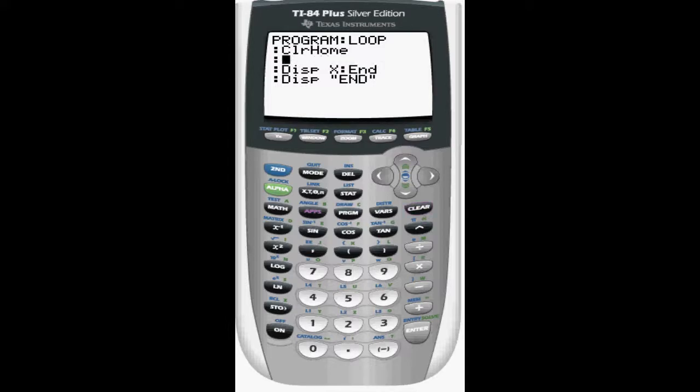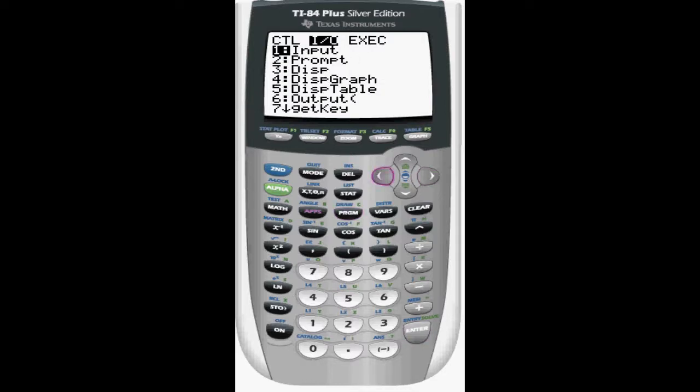So now I'll briefly explain the get key function. I believe there are a couple different ways to use this, but the way I've been taught is using it within a loop and storing it to a key. So let's see here, we're going to go get key, store to z.